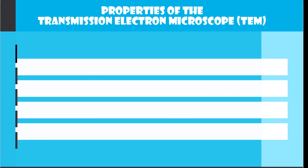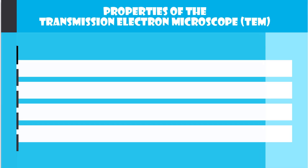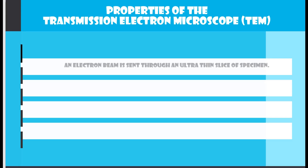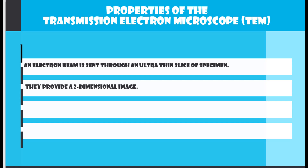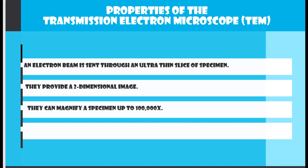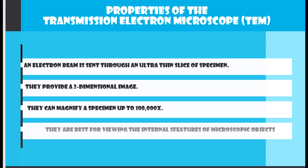The properties of the transmission electron microscope are as follows: an electron beam is sent through an ultra-thin slice of a specimen, they provide a two-dimensional image, they can magnify a specimen up to 100,000 times, and they are best for viewing the internal features of microscopic objects.